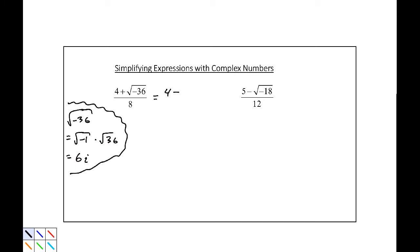This is 4 plus, I don't need my square root anymore, 4 plus 6i over 8. We can then reduce by a factor of 2. Factoring a 2 out as a greatest common factor: 2 plus 3i over 8. And that 2 reduces this down to 2 plus 3i over 4.